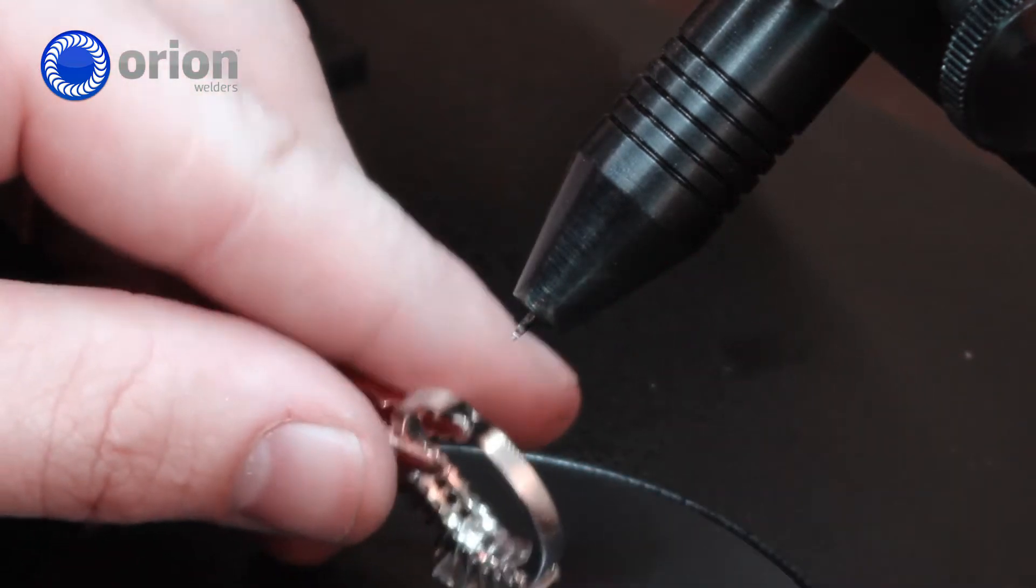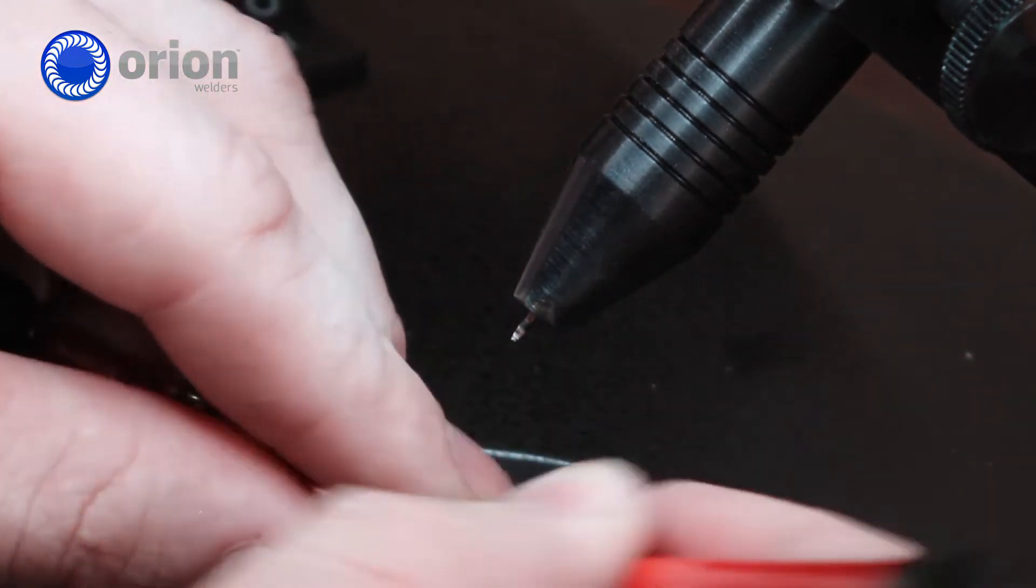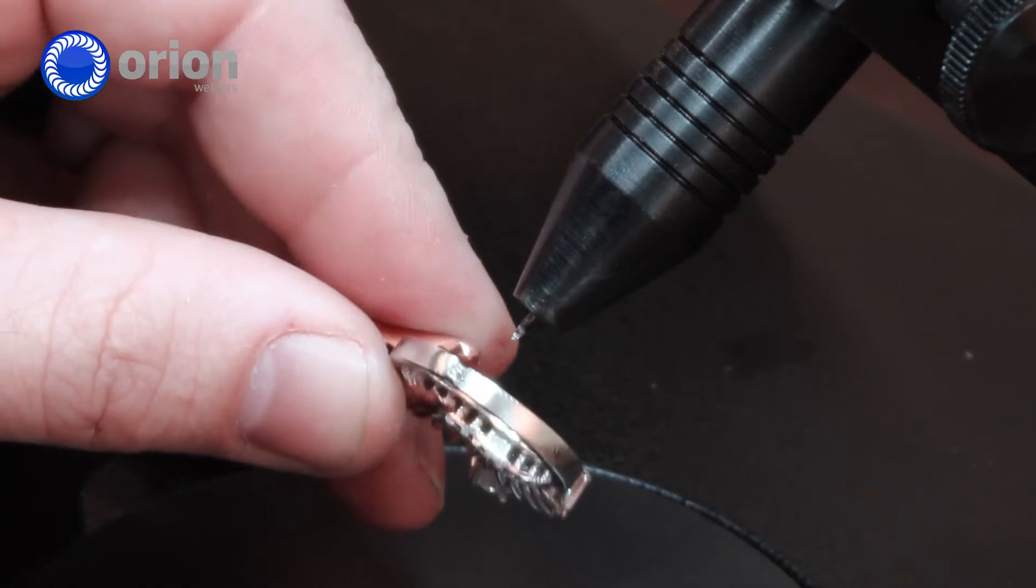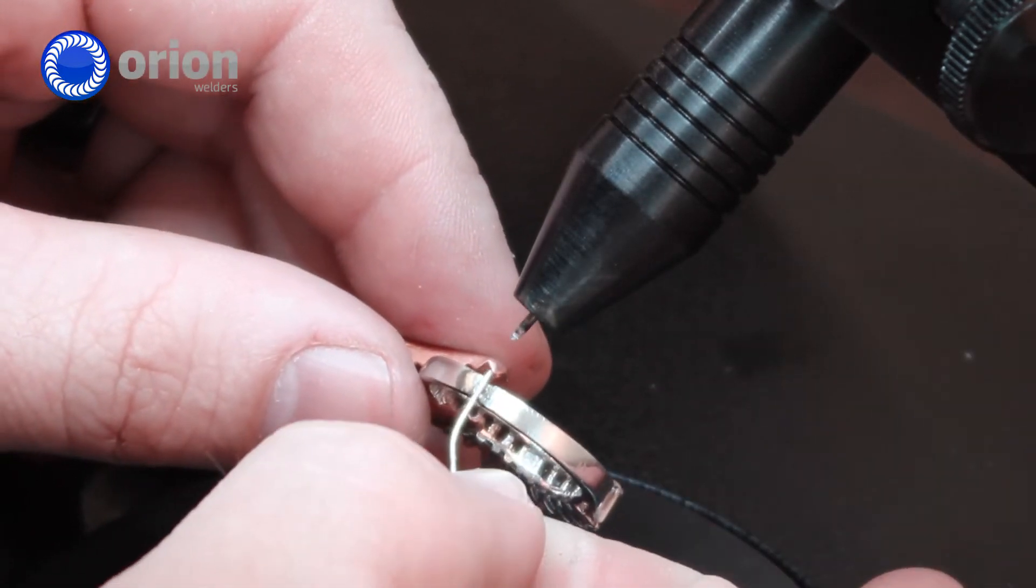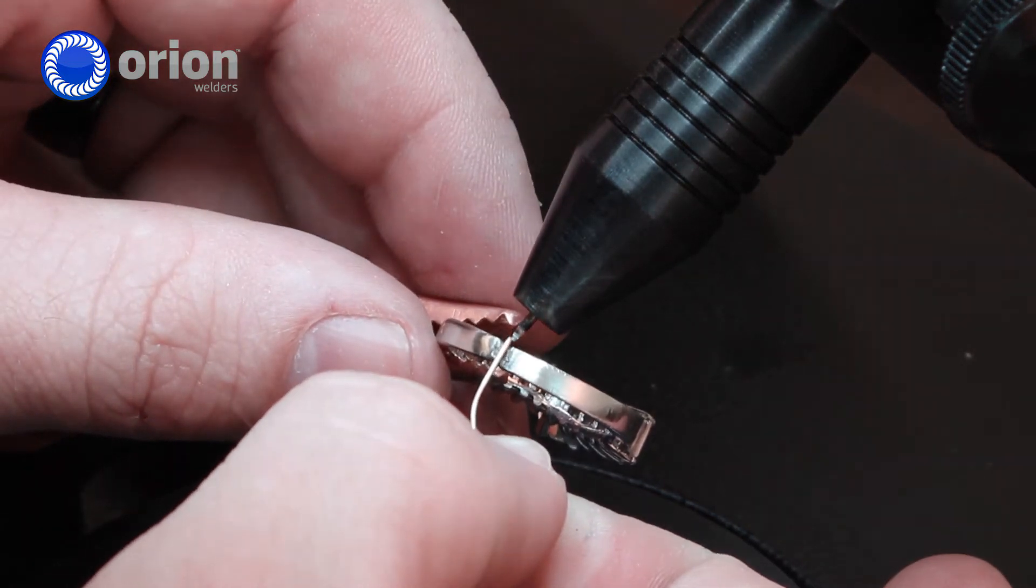So now there's a bit of necking down of the material where I'm welding. So I can bring my 24 gauge wire in again. Same electrode, same energy. And just add material.